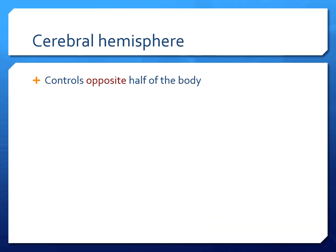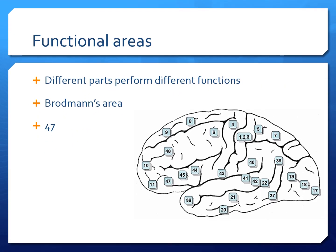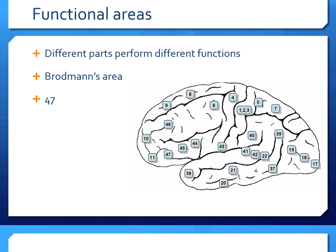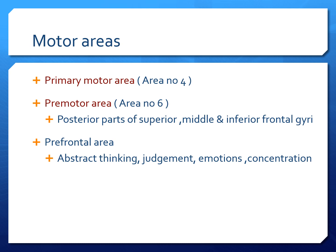We must always remember that the cerebral hemisphere controls the opposite half of the body. Different parts of the cerebrum have different functions, and Brodmann has divided the cortex into different areas concerned with different functions — called Brodmann's areas — totaling 47 in number. The first is the motor area. The primary motor area is area number 4, and the pre-motor area is area number 6.